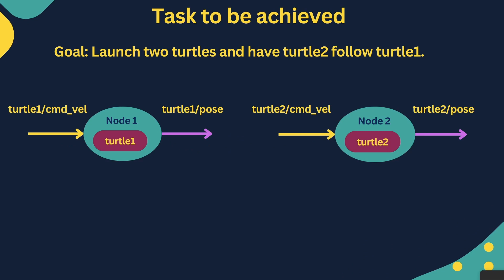First let us understand what task we want to achieve. The goal is to launch two turtles and make turtle2 follow turtle1 without giving any command directly to turtle2 — meaning we will only give commands to turtle1, and turtle2 has to follow turtle1.